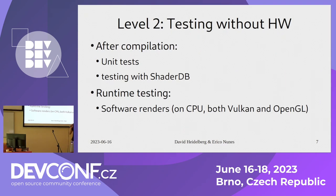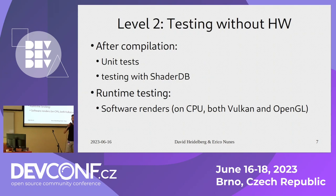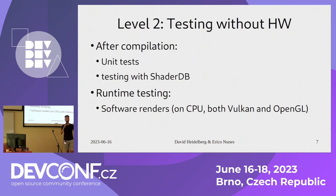Level two — testing without hardware. After we compile Mesa, we do simple compilations. On some jobs, we're testing unit tests — basic functionality of the library. We're testing shaders with ShaderDB, where we kind of fake the GPUs and test shaders on the backends, so we know the generated graphics shaders are okay. Then we use runtime testing. We can do that without hardware because we have a few drivers which run on CPU — just emulated — so we can test Vulkan and OpenGL on CPU.